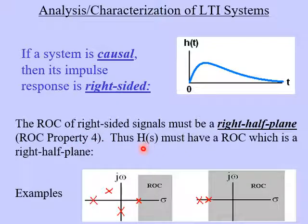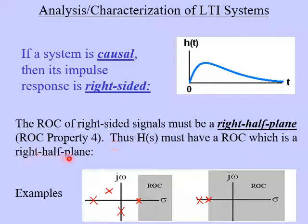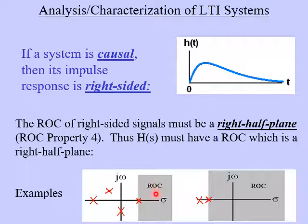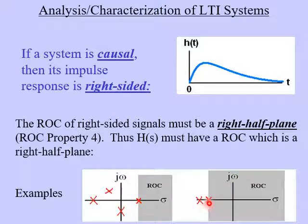Thus, the transfer function H of S, which is the Laplace transform of H of T, must have a region of convergence which is a right half plane. Here are a couple examples of causal systems. In this first example, we have some poles plotted, but the ROC is a right half plane — everything to the right of this pole here. In this second example, same thing: the ROC is a right half plane, everything to the right of this particular pole.